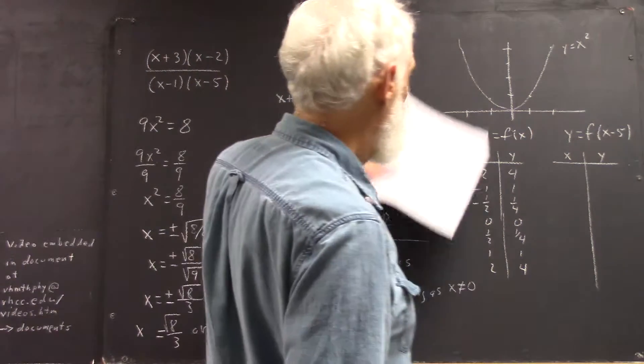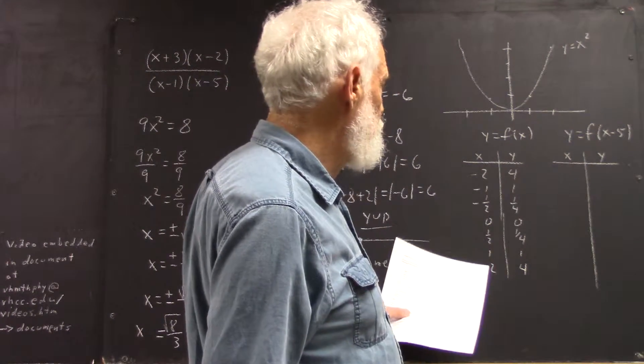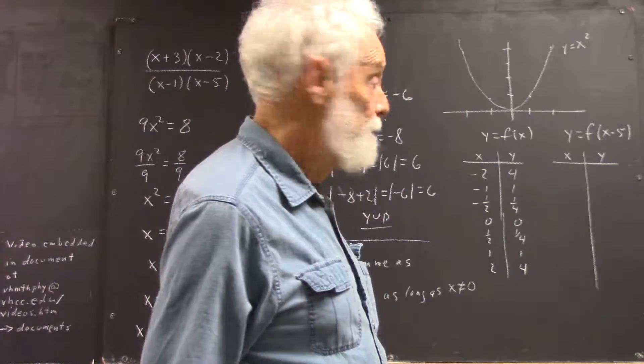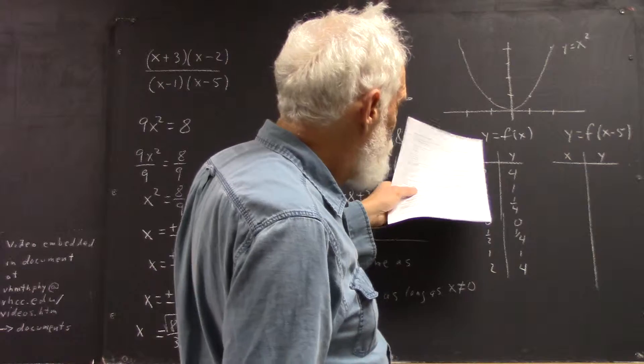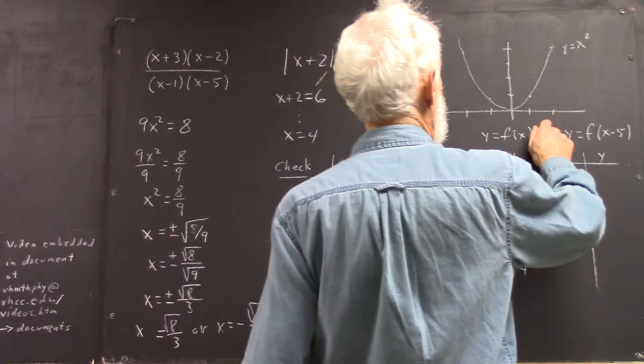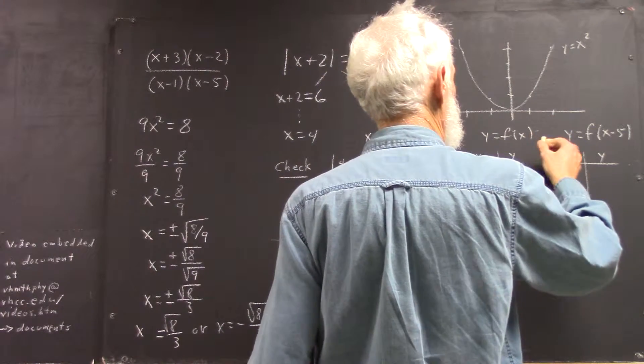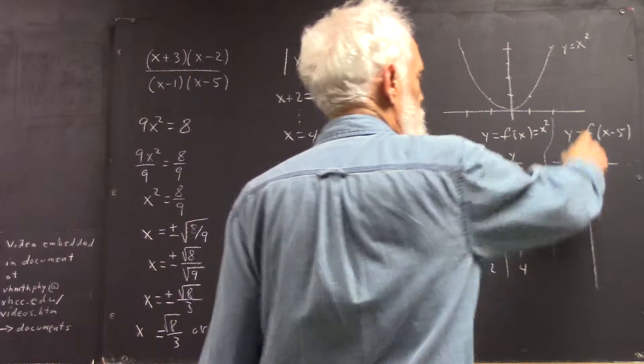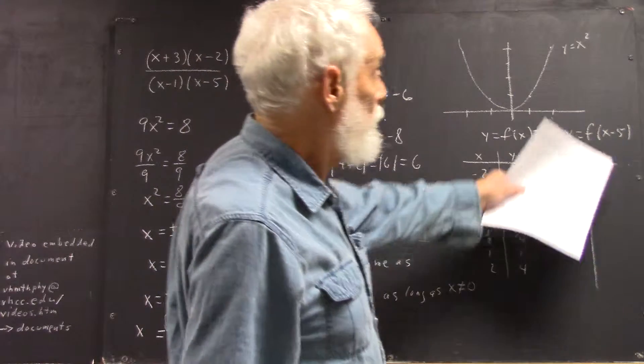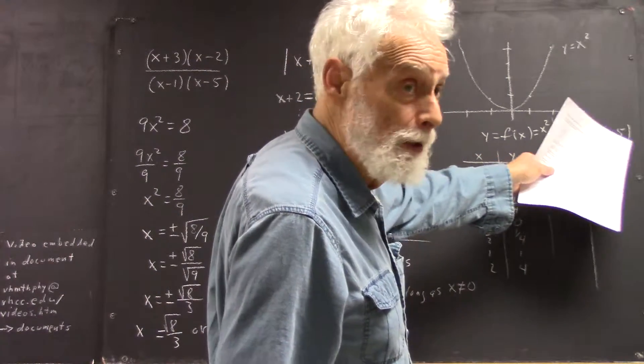Okay, we have our table and graph for y equals x squared. And if y equals f of x equals x squared, we want a graph, a table, then a graph of y equals f of x minus 5.